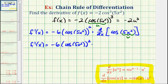so we'll have negative sine v times v prime, or negative sine five x squared times the derivative of five x squared, which would be 10x.